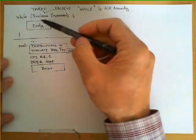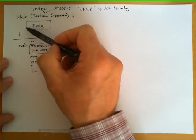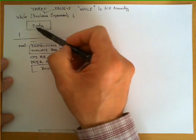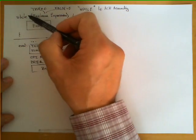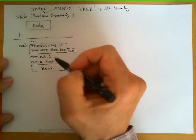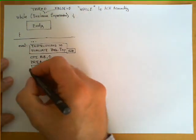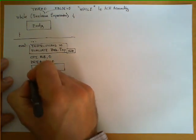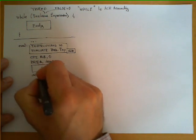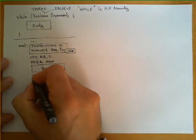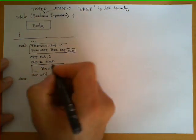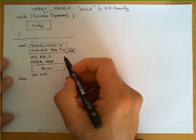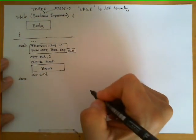As soon as the body has been executed, the loop must go back to the evaluation and repeat. So there is an unconditional jump that brings us back to eval. Immediately after this instruction, we place the label done, which is the destination of the conditional branch.